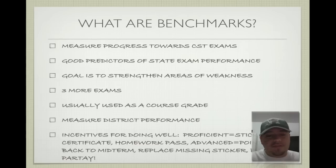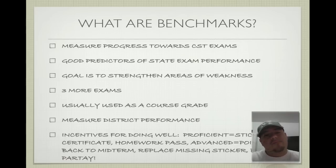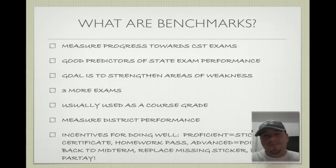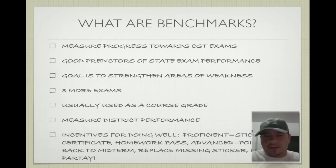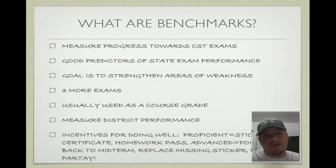There are incentives for doing well. If you score proficient, you get your sticker. If you score proficient or advanced, you get your sticker and certificate, plus a homework pass. If you score advanced, you not only get your sticker, certificate, and homework pass, but you get points back on the midterm — about 10 to 15 points back, depending on how high you score.